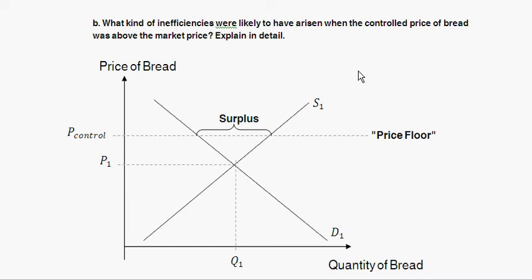To summarize Part B: there's inefficiently low quantity leading to wasted resources; inefficient allocation of sales among sellers allowing relatively inefficient firms to keep producing; inefficiently high quality where firms distinguish themselves with quality that isn't actually demanded; and an inefficiency from incentives for black market or illegal activity when the price control can't be perfectly enforced.